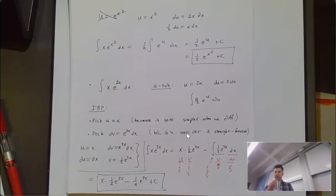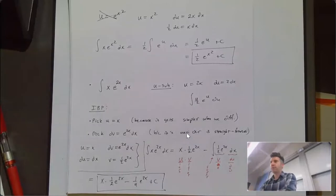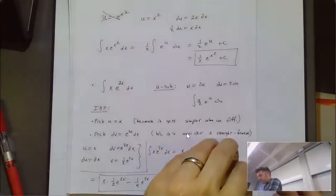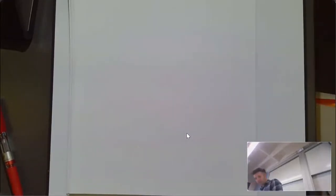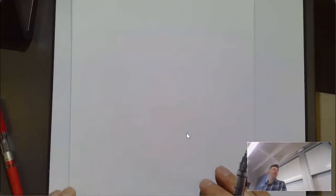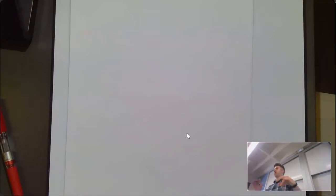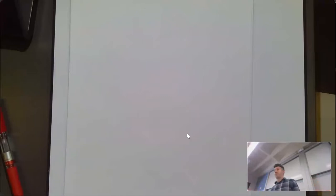Let's do some more examples. This is where things start getting more challenging, because we have integrals and we have to decide what method to use — sometimes you guess the wrong thing first. Let's look at the integral of 1/x times (ln x)².